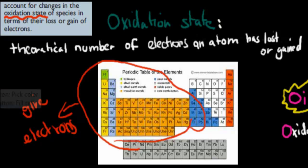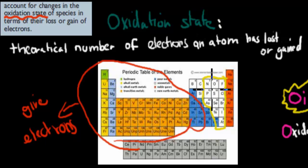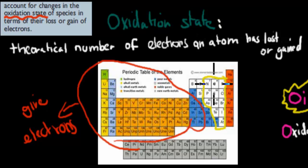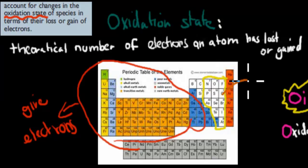On the other side of the spectrum, we have non-metals. Not included are noble gases, because noble gases are generally quite happy — they have eight electrons. For example, nitrogen has five electrons in its outer shell and oxygen has six, so they only need to take a couple of electrons to get to eight. So non-metals are the ones which take electrons — these are the takers.